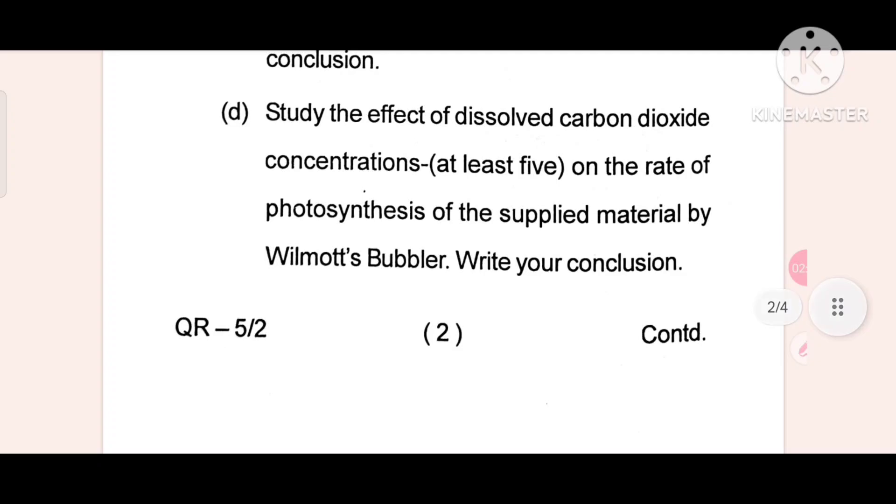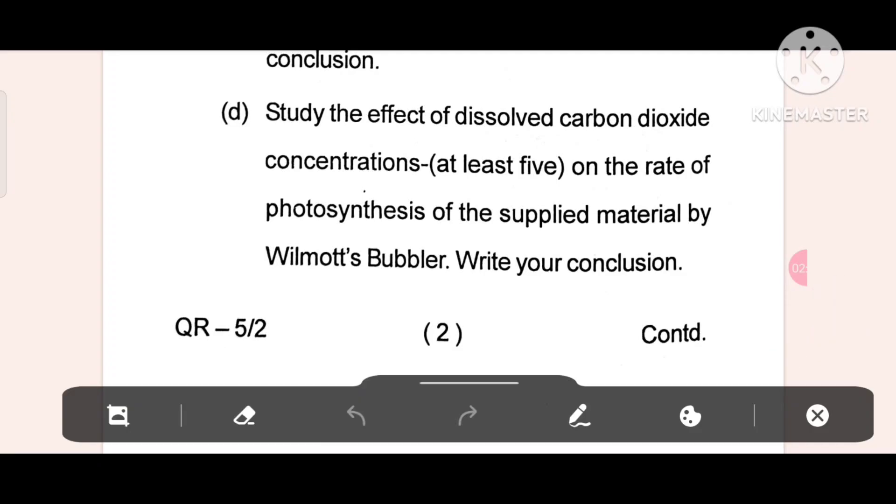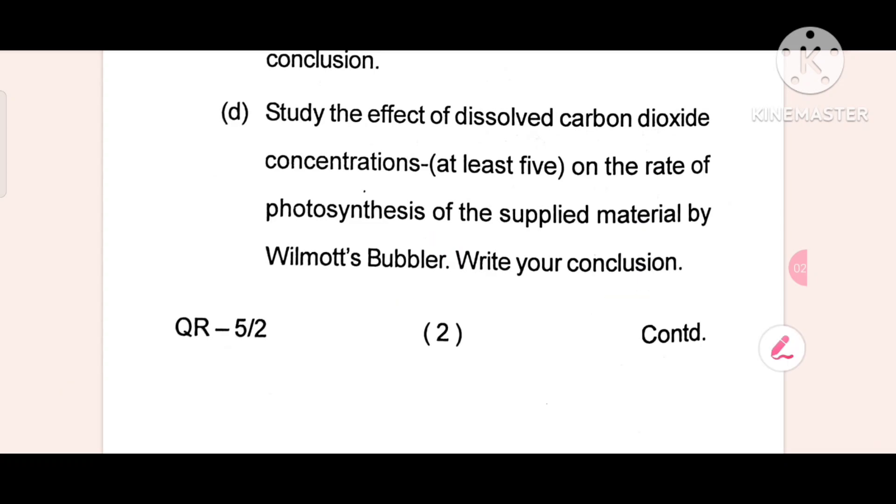Next, study the effect of dissolved carbon dioxide concentration, at least five, on the rate of photosynthesis of the supplied material by Wilmott's bubbler. Write your conclusion.